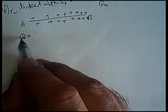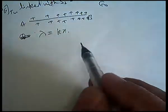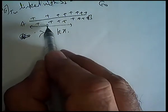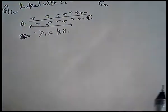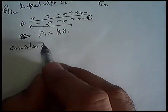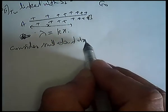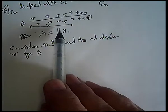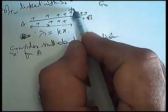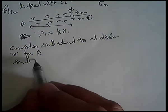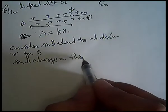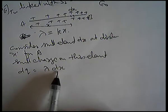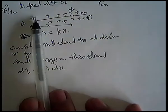Linear charge density lambda equals kx. अब consider small element dx at distance x from A. Small charge on this element: dQ equals lambda dx equals kx dx. अब हमें find करना है कि total charge कितना है इस wire AB पर.